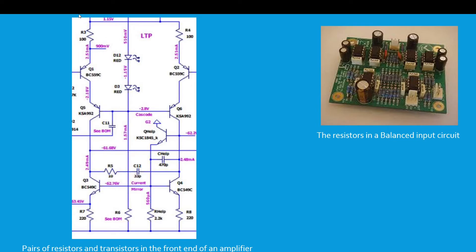The same goes for the two resistors at the top — you could argue they're probably more critical, the 100 ohm resistors in the long tailed pair. I would strongly suggest you buy a few extra of those and match the values in pairs. Another circuit which benefits from matched resistors is the balanced input circuit on the front end of some pro audio equipment and the like.